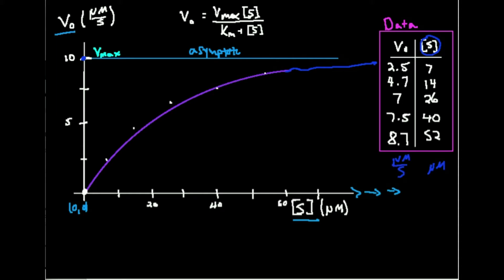You'll have some way to measure it. For example, when I used seven micromolar of substrate, the rate was 2.5 micromolar per second. When I used 14 micromolar, the rate was 4.7 micromolar per second. When I used 52 micromolar of substrate, the rate was 8.7 micromolar per second. I take each of these points and plot them on this graph for the Michaelis-Menten plot.